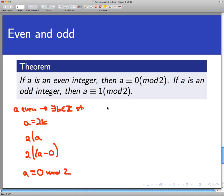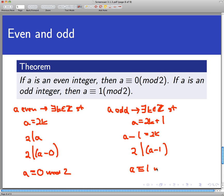Now, likewise, if A is odd, then what we all know is that there exists an integer, let's call it k again, such that A is equal to 2k plus 1. Now, let's take that equation and subtract 1 from both sides, and I have A minus 1 equals 2k. What this is telling you is that A minus 1 is a multiple of 2. That is, that 2 divides A minus 1. And using the definition of congruence, I then can conclude that A is congruent to 1 mod 2.